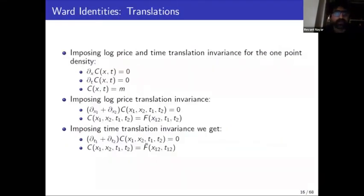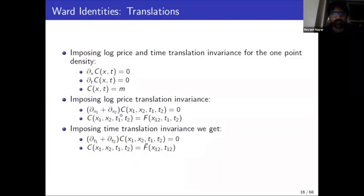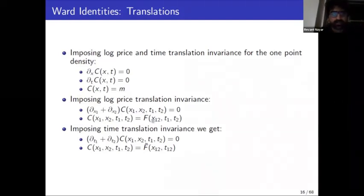We want all our observables to be invariant under the actions of the generators. For the one-point function it's trivial — you just get a constant. For the two-point density function, you apply log price and log time translation invariance to get that your density function depends not on price and time independently, but only on the difference between them.